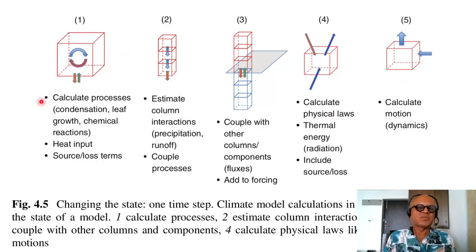This is the process you are looking at with exchanges between grids. Calculate processes like condensation, leaf growth, chemical reactions, heat input, and source and loss terms. What humidity is coming in, what is going out, what heat is coming in, what heat is going out.